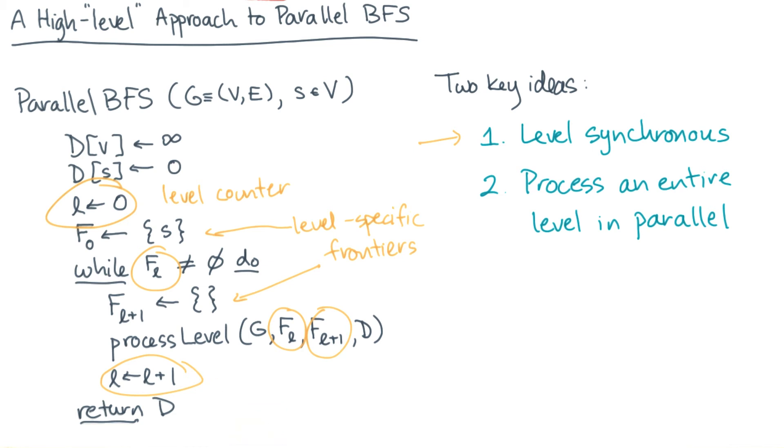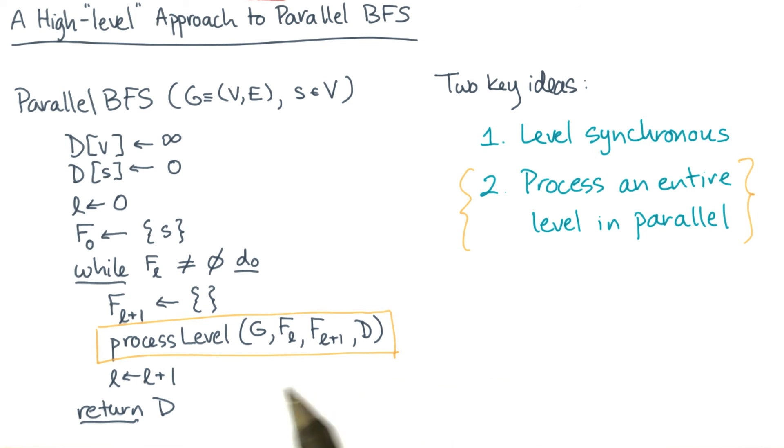Now to implement the second idea, I've hidden everything in this function called process level. We're going to have to say more about how you actually implement this thing. But essentially what it does is it takes the graph and the current frontier, and it'll produce a new frontier. It'll also update the distances, of course.